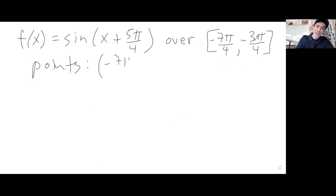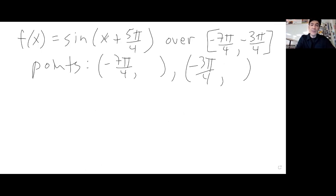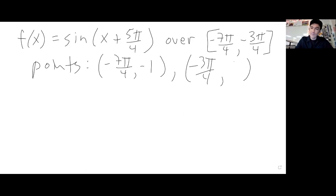So here are the points that are on this curve. We have negative 7 pi over 4, comma, something. And then we have negative 3 pi over 4, comma, something. If you plug negative 7 pi over 4 in for x on a calculator in radians, you get back negative 1. If you plug negative 3 pi over 4 in for x on a calculator in radians, you get back positive 1. So these are two points that are on this sine wave.